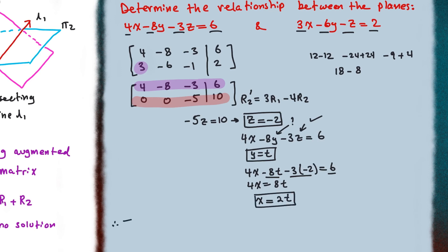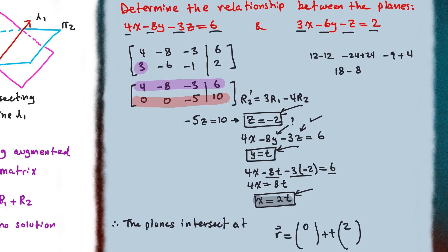We have now found the parametric equation of the line, which is the intersection of these two planes. We can leave the answer in parametric form or write it in vector form. Vector r equals our initial position (0, 0, −2) plus t times our direction vector (2, 1, 0) for x, y, z.